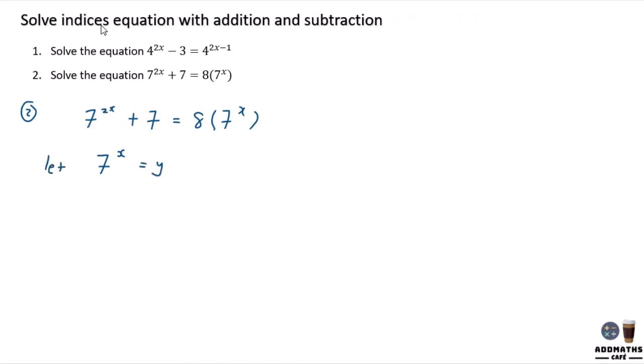So letting 7^x equal to y. So in this case, you know that 7^(2x) will be y squared. And from this equation, you can say that y^2 + 7 = 8y. And in this case, bring everything to one side, you will have this equal to zero.